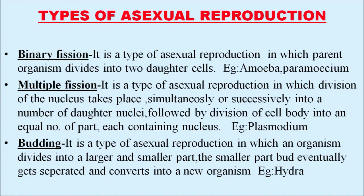The types of asexual reproduction: first is binary fission. Fission means breakage. In binary fission, it is a type of asexual reproduction in which the parent organism divides into two daughter cells. Examples of binary fission are amoeba and paramecium. In multiple fission, it is a type of asexual reproduction in which division of the nucleus takes place simultaneously or successively into a number of daughter nuclei, followed by division of the cell body into an equal number of parts, each containing a nucleus.